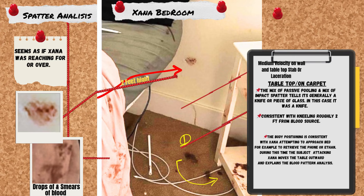Wound class: non-projectile — no gun-related mist. Possibly defensive: smear patterns suggest victim raised arms or hands. Severity: moderate. Victim survived the initial impact long enough to move. Smears indicate mobility, but significant blood was lost. No signs of prolonged struggle, e.g. widespread distribution.